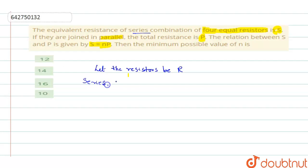if the resistors are connected in series, then the R equivalent will be equal to 4R, right?